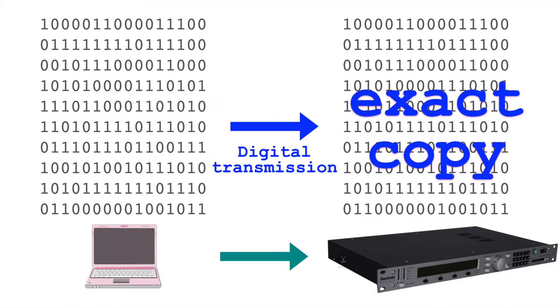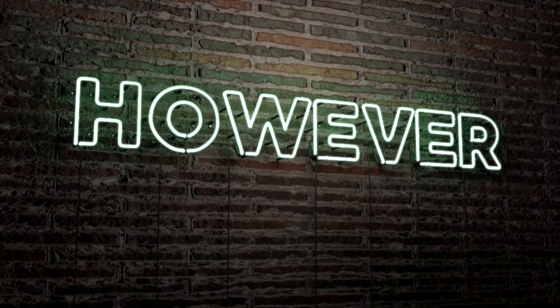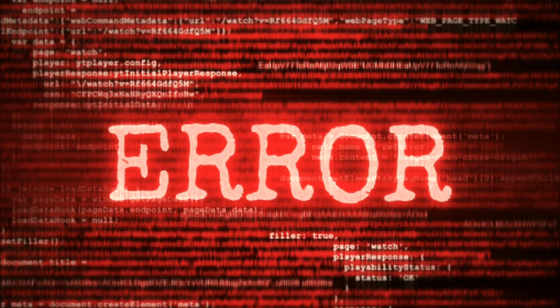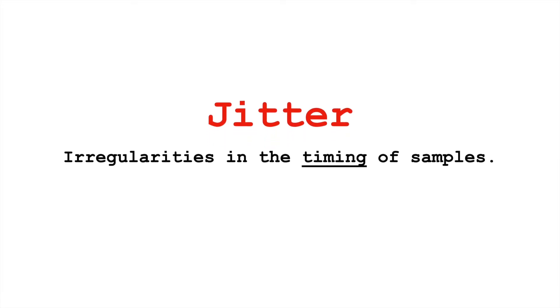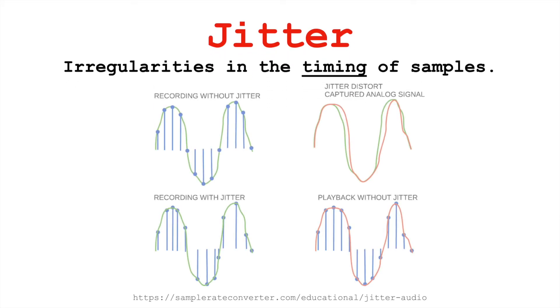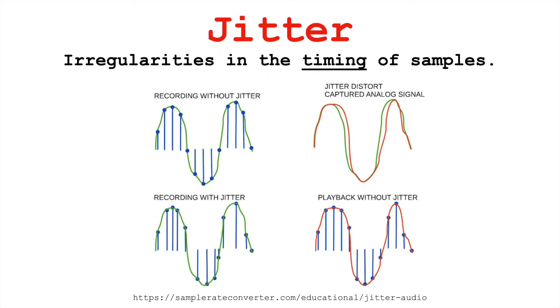If we transmit this digital data as digital data without doing any conversion, we may achieve higher fidelity. But digital transmission is not immune to error. One significant problem we need to be aware of is jitter, which is irregularities in the timing of samples.